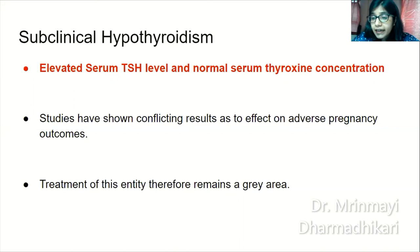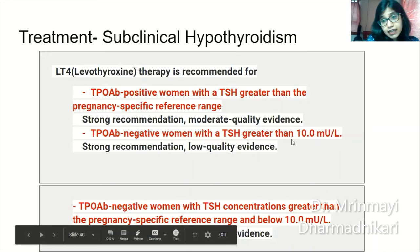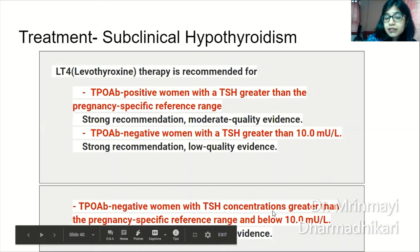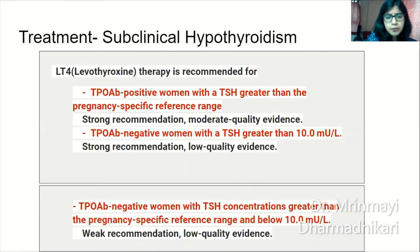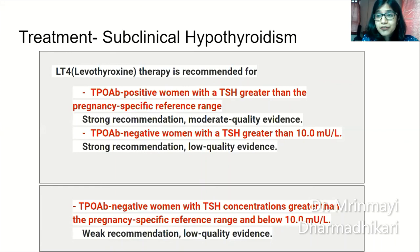Recommendations for treating subclinical hypothyroidism: levothyroxine is strongly recommended for TPO antibody-positive women with TSH greater than the pregnancy-specific reference range. TPO antibody-negative women with TSH greater than 10 should definitely be treated. TPO antibody-negative women with TSH above the pregnancy-specific reference range but below 10 can be treated, though there is only a weak recommendation with low-quality evidence; however, most clinicians do treat them because the potential benefit of small doses of levothyroxine far outweighs the minimal risk.